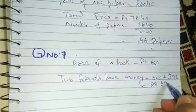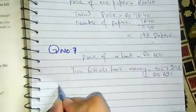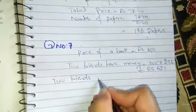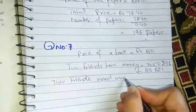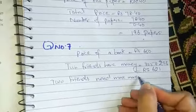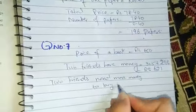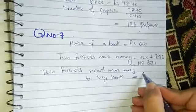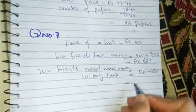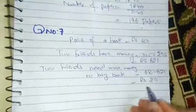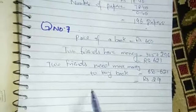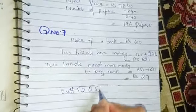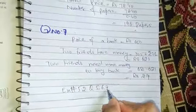So two friends need more money to buy the book: 650 minus 621. So two friends need 29 rupees to buy the book. So students, your diary complete. Today's diary is exercise number 5.2, question number 5, 6, and 7. Practice. Thank you.